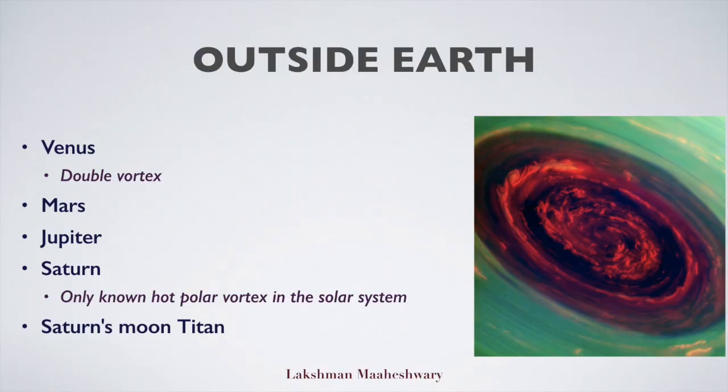Interestingly, polar vortices are not restricted to Earth only — other astronomical bodies are also known to have polar vortices. Venus has a double vortex, meaning it has two polar vortices at a pole. Other planets with polar vortices include Mars, Jupiter, Saturn, and Saturn's moon Titan. What is particularly interesting is that Saturn's South Pole is the only known hot polar vortex in the solar system.